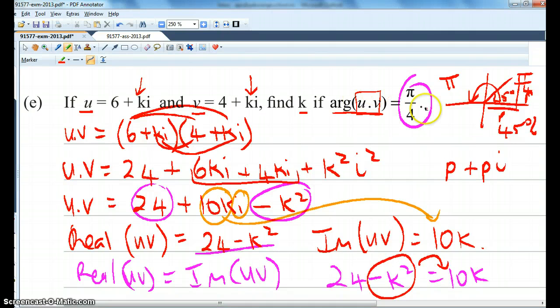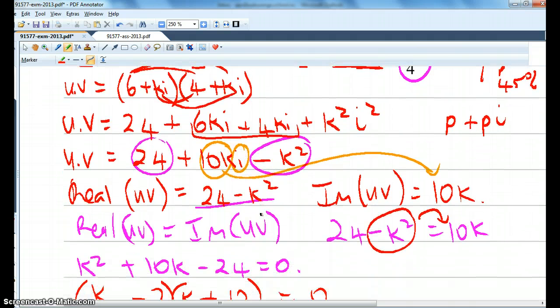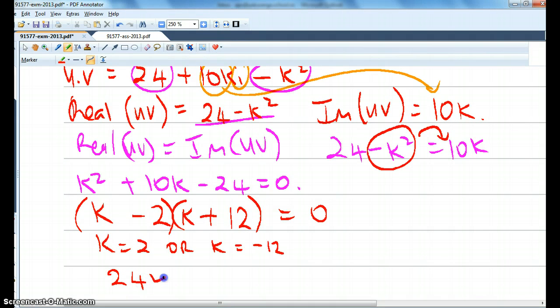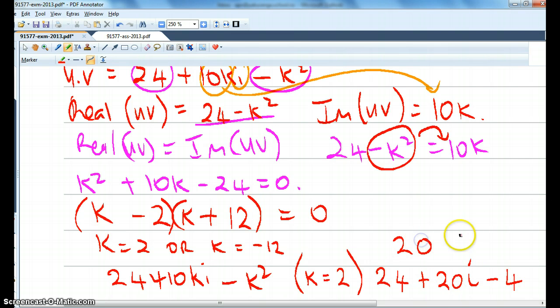So u times v was 24 plus 10ki minus k squared. When k equals 2, we have 24 plus 20ki minus 4. So that's going to be 20 plus 20ki. And so we've got our 20, 20 and our 45 degrees. So that fits the bill. So k is 2 works.